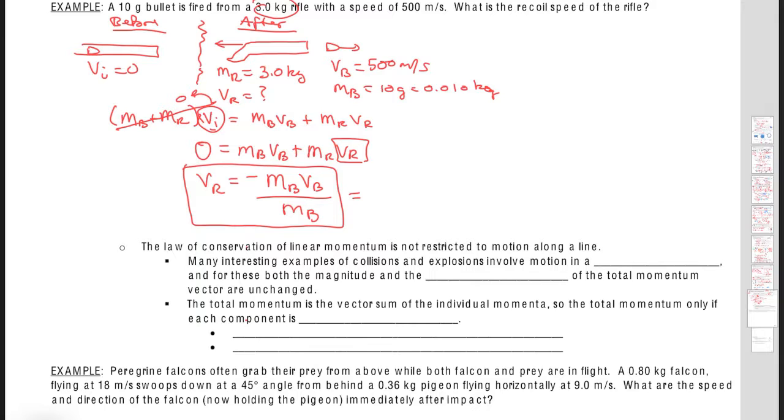Okay, and so what we do is we just simply plug in negative mass of the bullet times the speed of the bullet divided by the mass of the rifle, which is 3 kilograms.